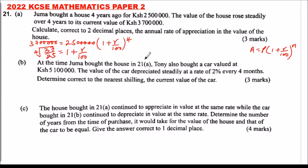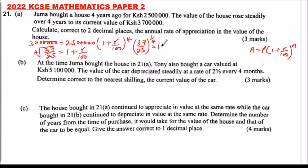Using your calculator, you get the fourth root of 37 over 25 — you can also raise it to power 1/4 — which gives 1 plus r over 100. When you do that calculation, you get 1.103 equal to 1 plus r over 100.